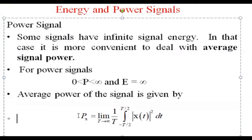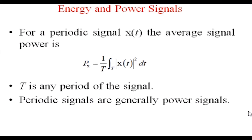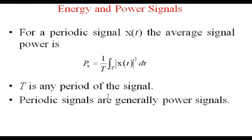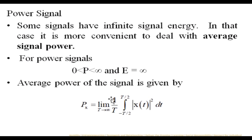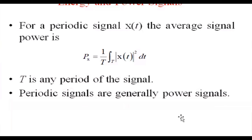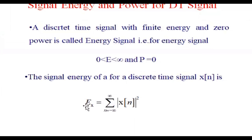Later we will see some numerical problems for more analytical detail about energy and power. For a periodic signal, the average signal power is given with limits changed to only T, where T is the period of the signal. Periodic signals are generally power signals.